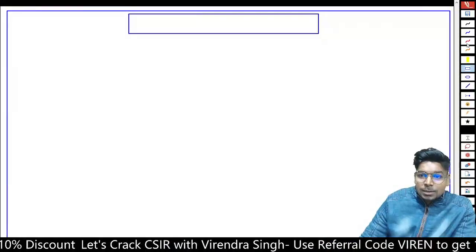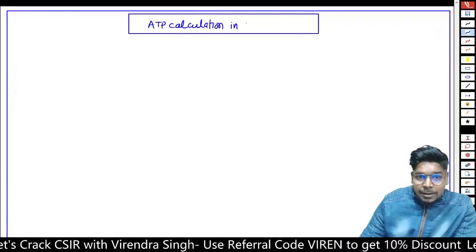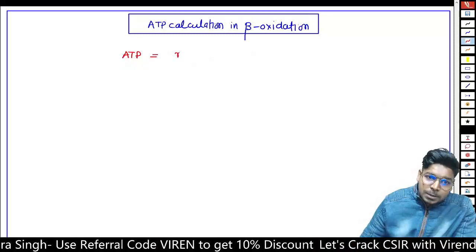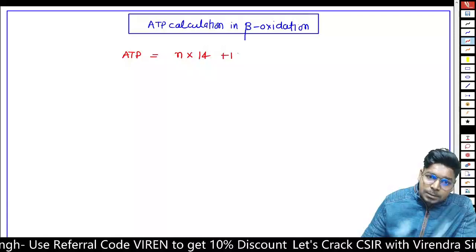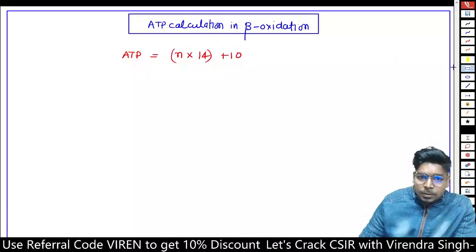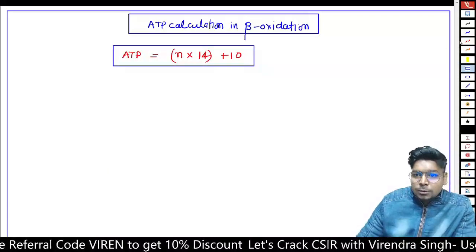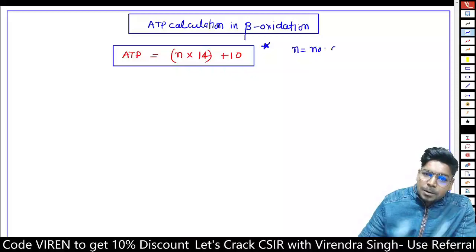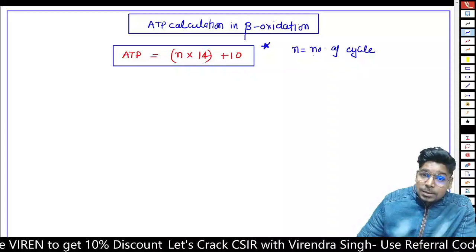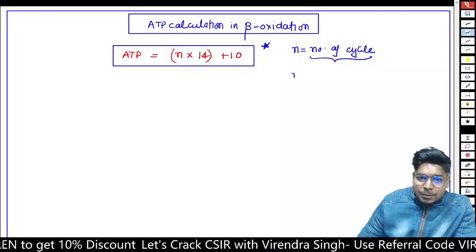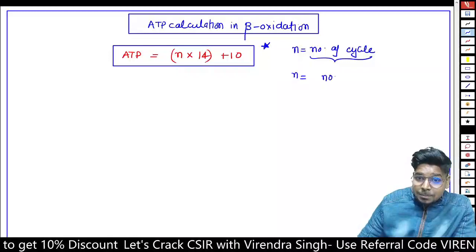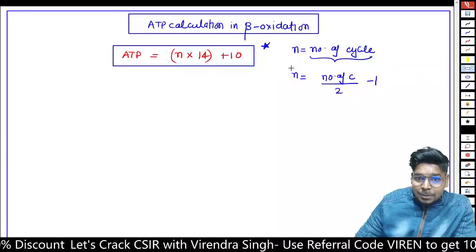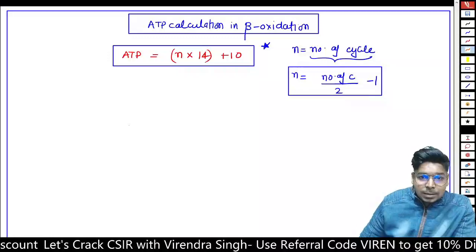ATP calculation - the most easiest formula in Beta Oxidation. ATP in Beta Oxidation should be N into 14 plus 8. N is the number of cycles. The number of cycles can be calculated as the number of carbons divided by 2 minus 1, in the fatty acid.